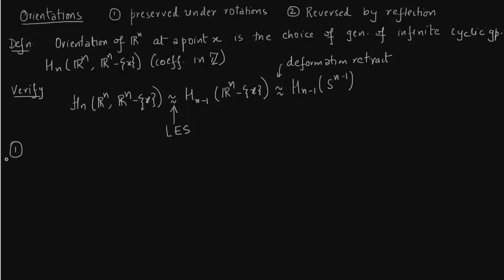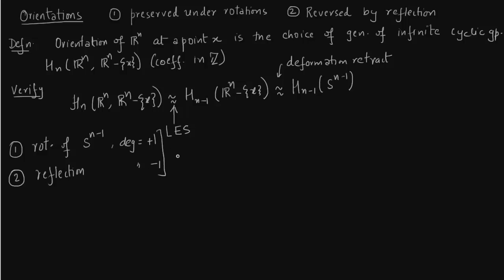The first thing to notice is that rotations for Sⁿ⁻¹ have degree one — rotation always has degree one. Reflection has degree minus one, which we have already covered in the degree lectures in homology. You can write this as α going to α for rotation and α going to −α in the case of reflection.